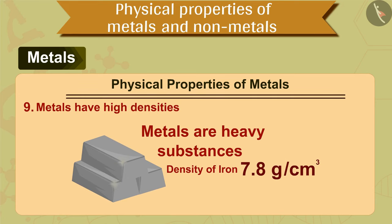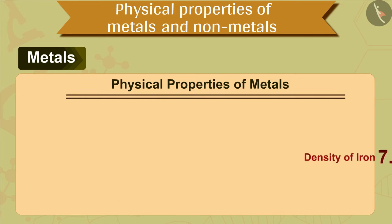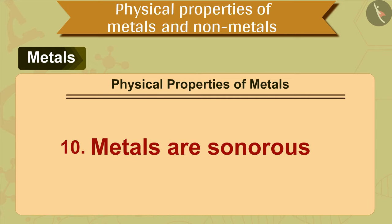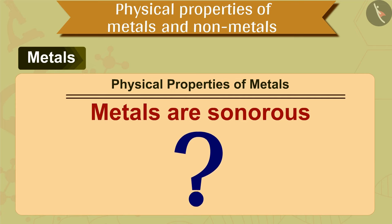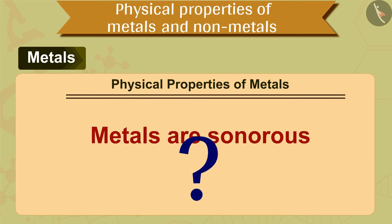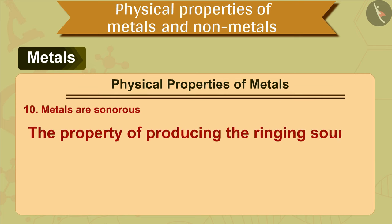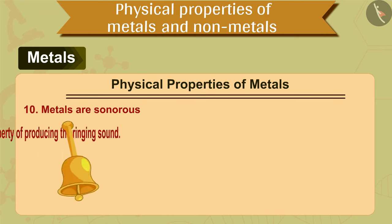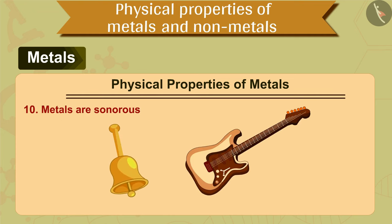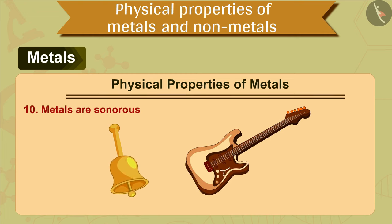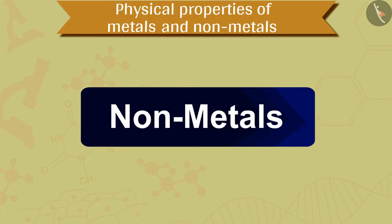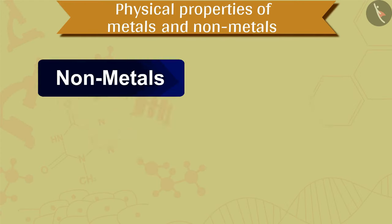The tenth property of metals is that metals are sonorous in nature. Sonorous means the property of producing a ringing sound when struck. It is due to this property that metals are used for making bells and strings of musical instruments like guitar.